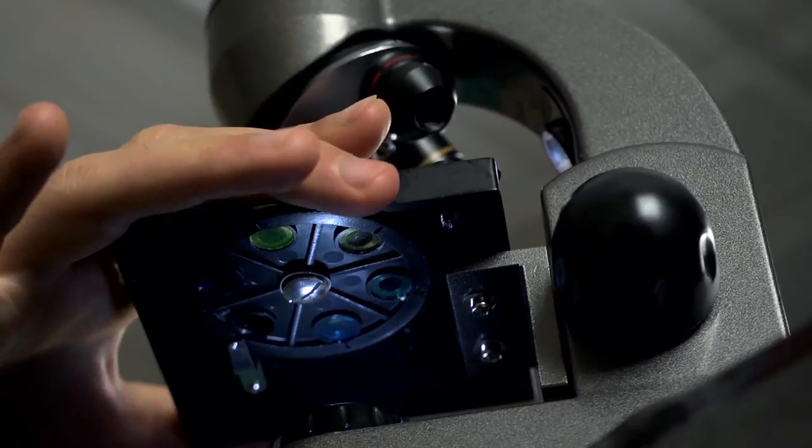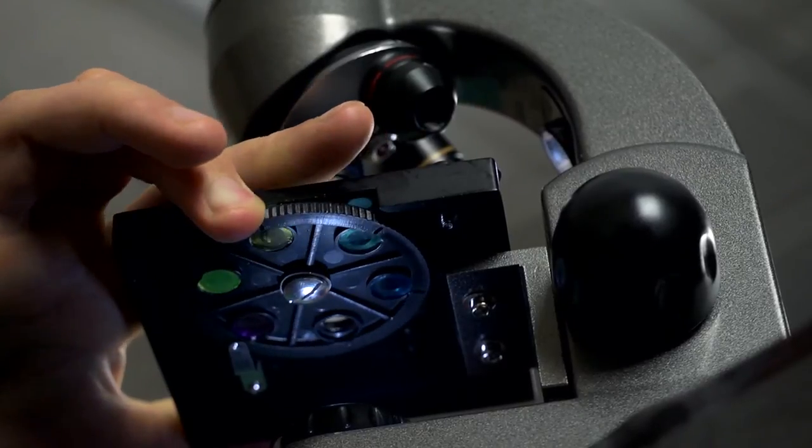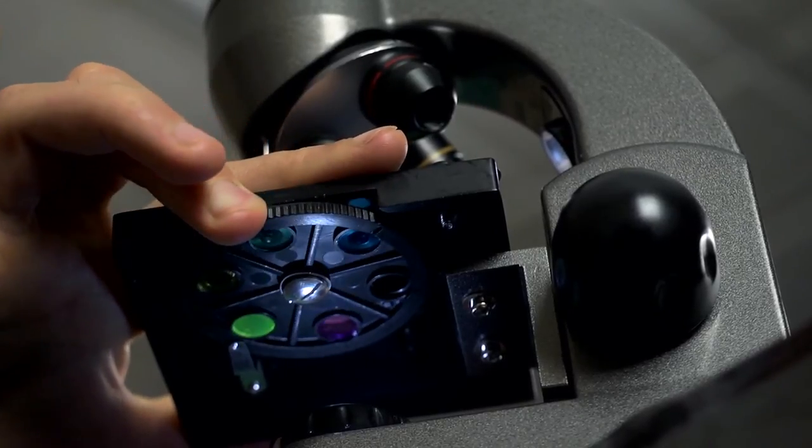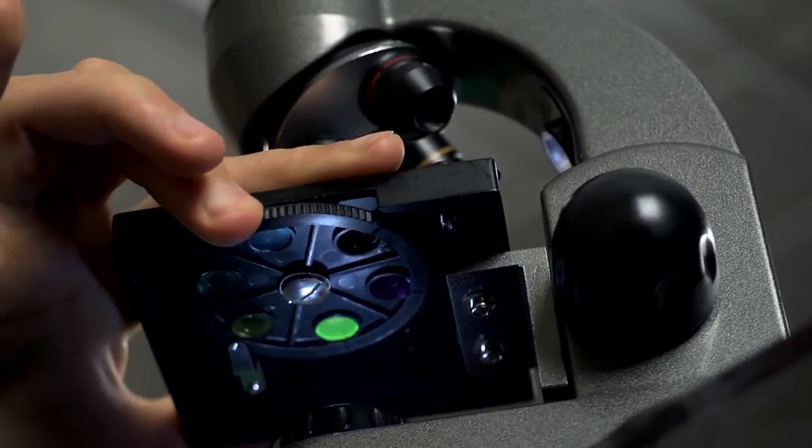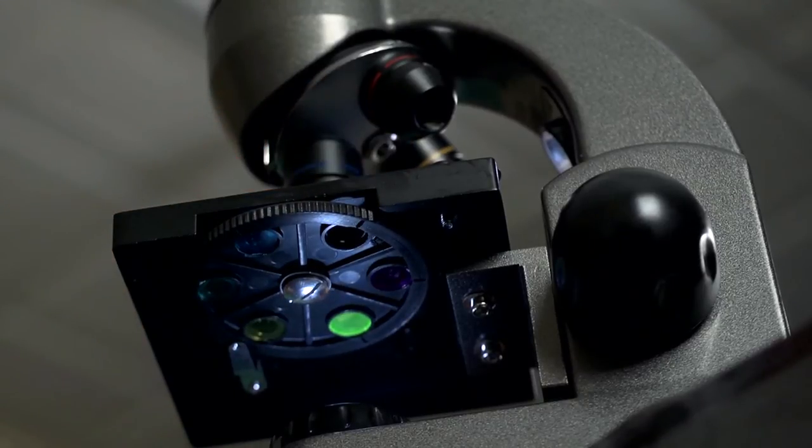Included with this microscope is a built-in color filter wheel. With this feature you can choose from five different background colors or choose to have no color at all. Depending on what you're viewing, certain filters will allow you to get more detail out of your specimen.